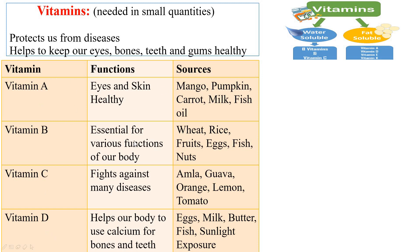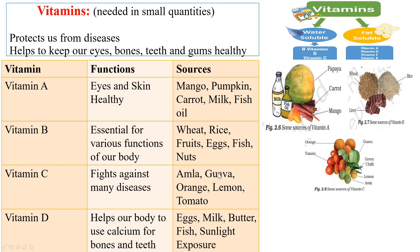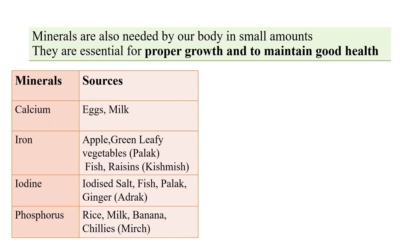Vitamin A keeps our eyes and skin healthy; important sources are mango, pumpkin, carrot, milk, and fish oil. Vitamin B is essential for various body functions; sources include wheat, rice, fruits, eggs, fish, and nuts. Vitamin C helps our body fight many diseases; sources include amla, guava, orange, lemon, and tomato. Vitamin D helps our body use calcium for bones and teeth; sources include eggs, milk, butter, fish, and sunlight — yes, our body can prepare vitamin D in the presence of sunlight.